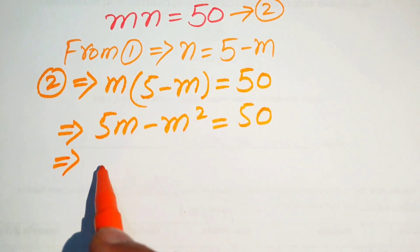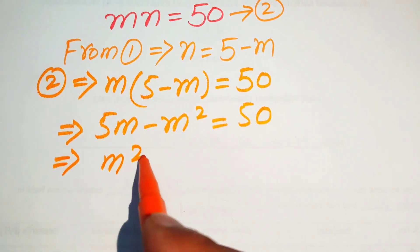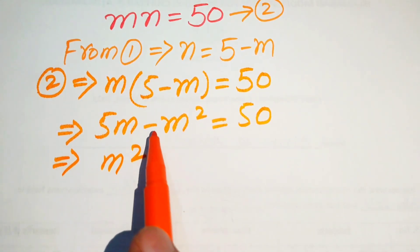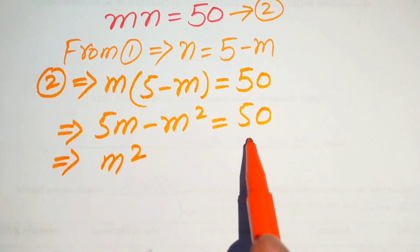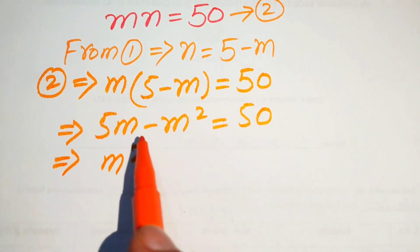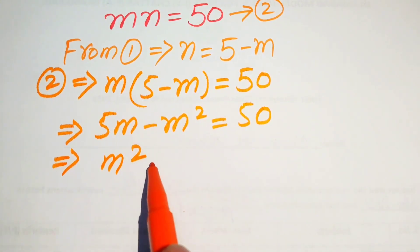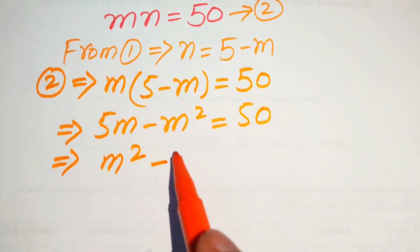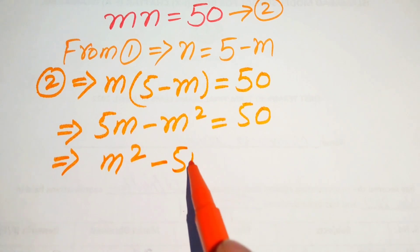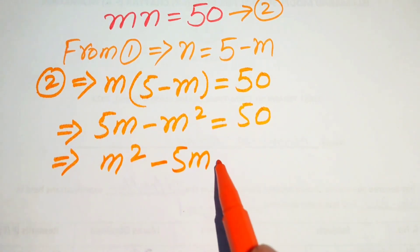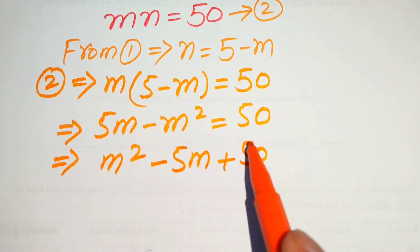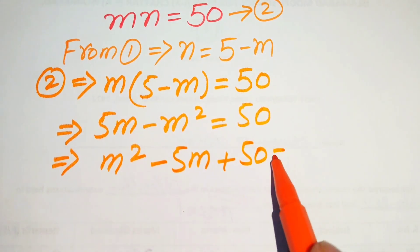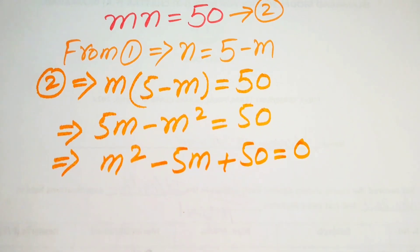Moving terms to the right hand side: negative m squared becomes positive m squared, positive 5m becomes minus 5m, and 50 remains on the right hand side, giving us m squared minus 5m plus 50 equals 0.